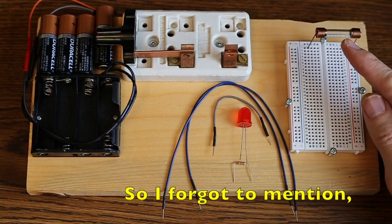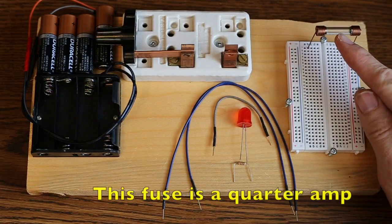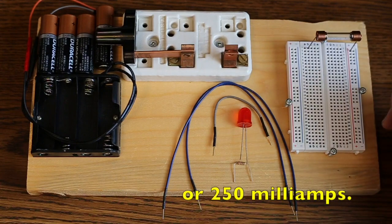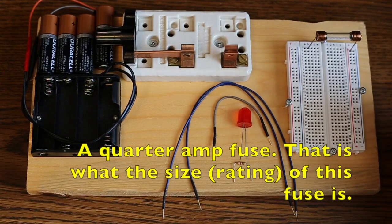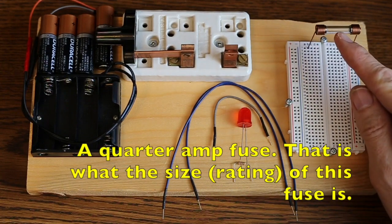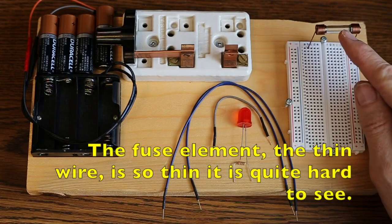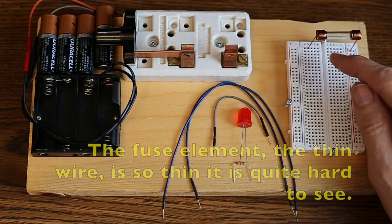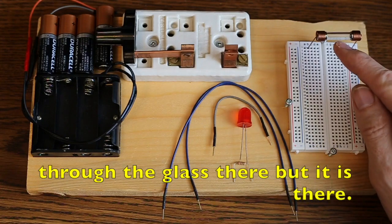So now I've got my fuse, and I forgot to mention this fuse is a quarter amp, or 250 milliamps. A quarter amp fuse, that's what the size of this fuse is. And the fuse element, the thin wire, is so thin it's quite hard to see through the glass there, but it is there.